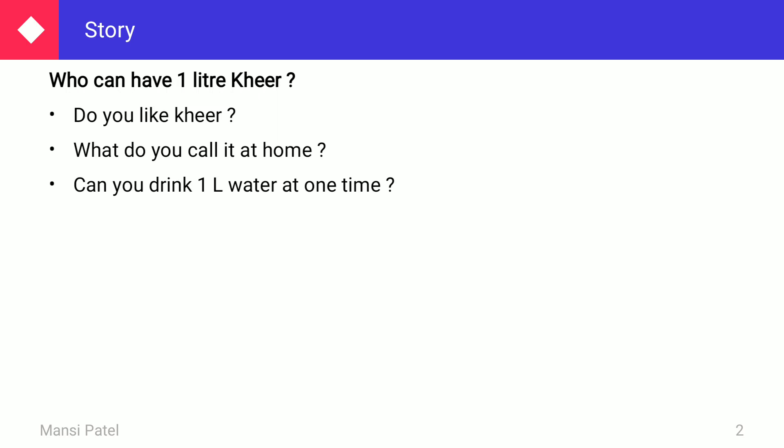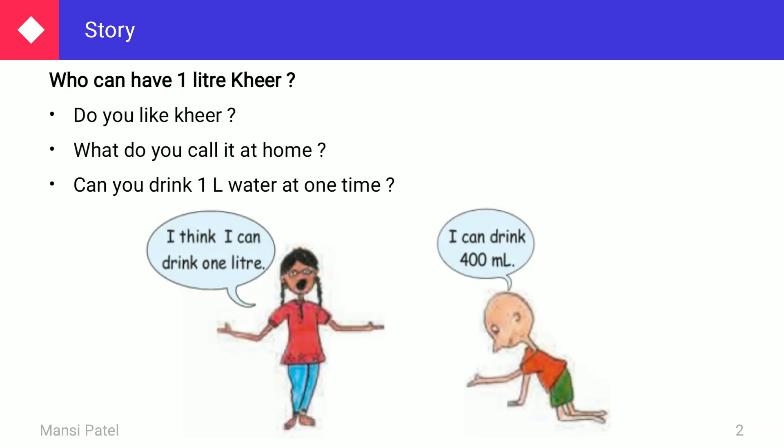Can you drink one liter of water at one time? No, we can't drink one liter of water at one time. Here one girl says she can drink one liter, whereas a small child says she can drink only 400 ml. Ml represents milliliter.